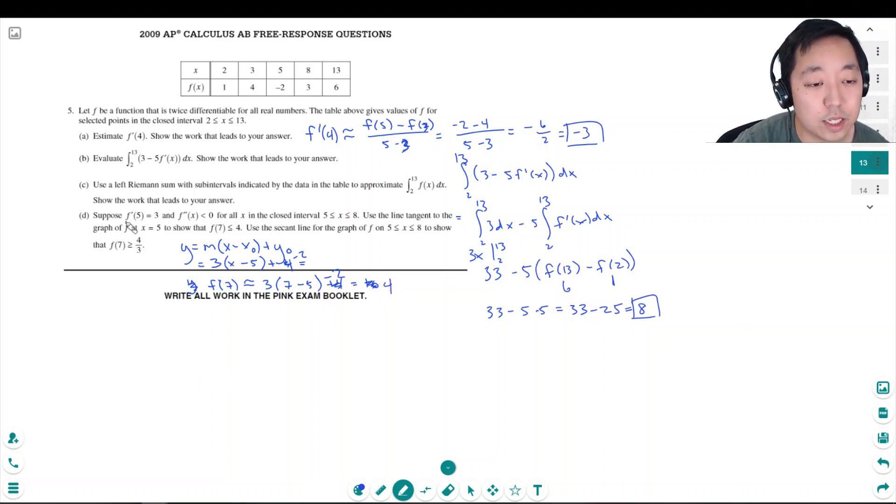But this thing is increasing and it's concave down, so it looks kind of like this. So what's happening is if I use the tangent line here, I'm really approximating the value. Like if this is x equals 5 and I use the tangent line, at x equals 7 is this. But this is concave down because the second derivative is negative. So this is an overestimate of f of 7. So that implies f of 7 is less than or equal to 4.